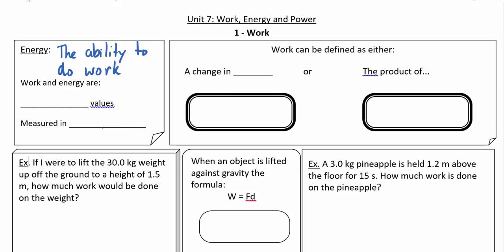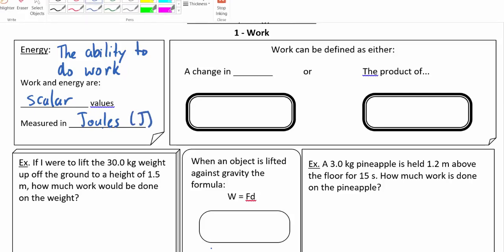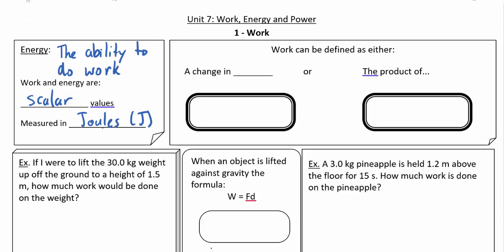So really loosely, if you want to do anything — if you want to pick something up off the ground, launch a rocket into space, cook some food — you have to use energy, and that's called doing work. Work and energy are scalar values measured in joules. We can define work as a change in energy: W equals delta E. Anytime the energy of something is changing, work is being done on it.